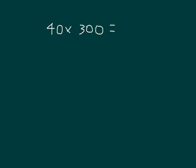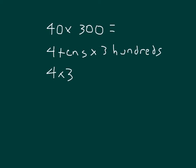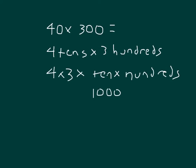Within this problem, we have 40 times 300, that's 4 tens times 3 hundreds. We can take 4 times 3, and then we're still multiplying by 10 times 100. 10 hundreds is 1,000. So we're taking 4 times 3, which is 12, times 1,000, which is 12,000. So 40 times 300 is 12,000.